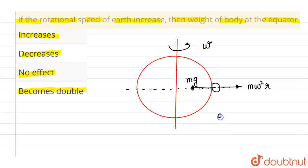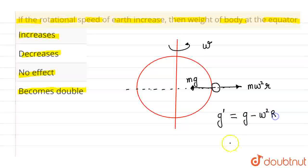Now, if you look at the effective gravitational acceleration, which is g dash, that comes out to be g minus omega square r. Now, as you increase the value of omega as the Earth is moving faster, then the value of g dash will decrease.